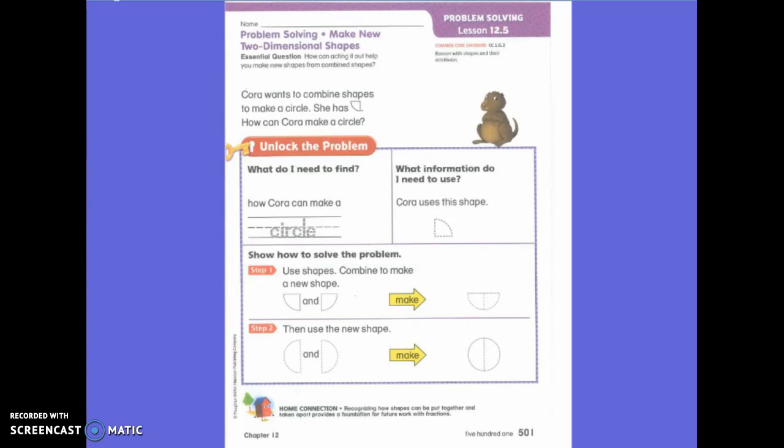Yesterday it would give us the shape and tell us to find this shape in that shape, so we would draw our line to show those two shapes.